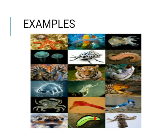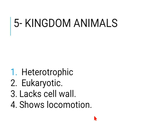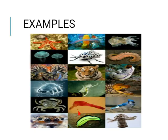The last kingdom is Kingdom Animalia. Animals are heterotrophic organisms — they obtain their nourishment from different sources and cannot prepare their own food. They are eukaryotic, lack a cell wall, and show locomotion. All animals, including vertebrates and invertebrates, belong to this kingdom.